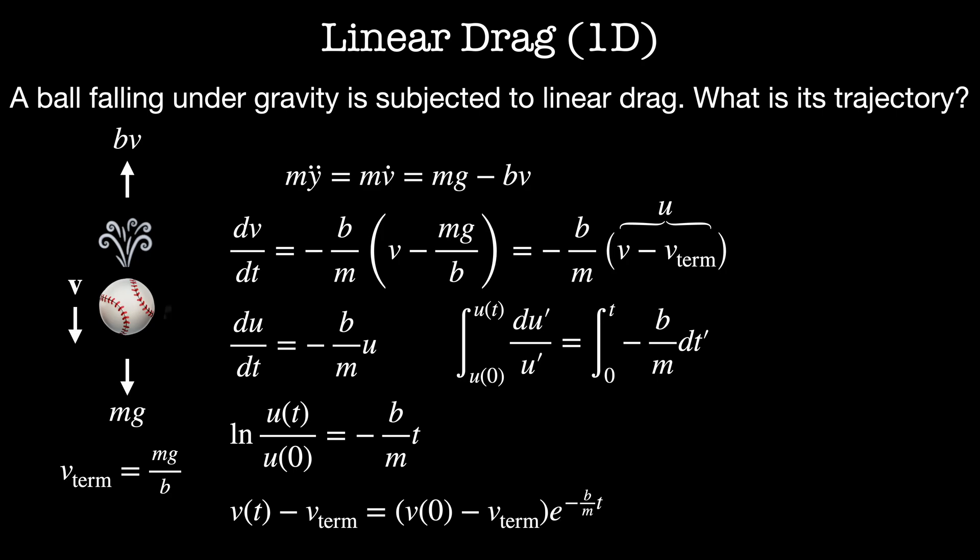To find the trajectory as a function of time I can integrate this once more. Let's sketch to see what this looks like. I have one term that decays exponentially and one term that's a constant. So here's the initial velocity and then I exponentially decay down to the terminal velocity. So if any of you have ever been skydiving this is what you would have felt.